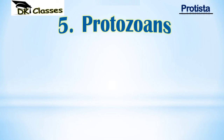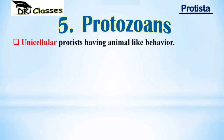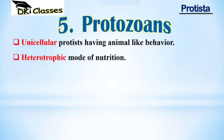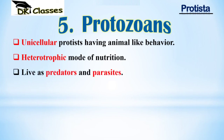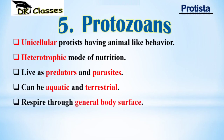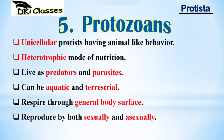The fifth phylum is Protozoans, which are heterotrophic Protista. They are unicellular with animal-like behavior due to their heterotrophic mode of nutrition. They live as predators and as parasites; they can be aquatic and terrestrial. They respire through the general body surface and reproduce both asexually and sexually.